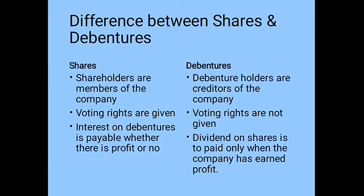The first difference is that shareholders are the members of the company. When shareholders purchase shares of the company, they are investing an amount in that company and they become the owner or member of the company. But when it comes to debentures, the debenture holders are the creditors of the company — meaning the company has an obligation to pay back the money borrowed from them.